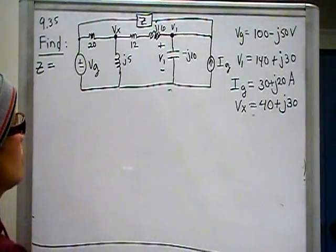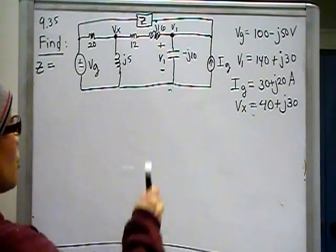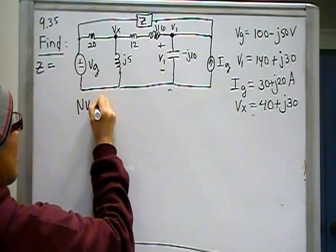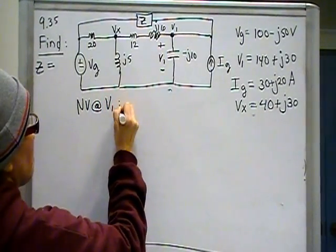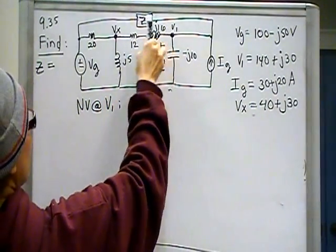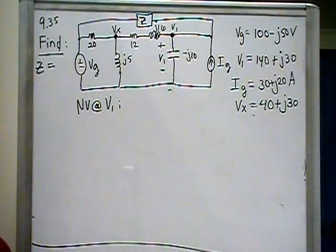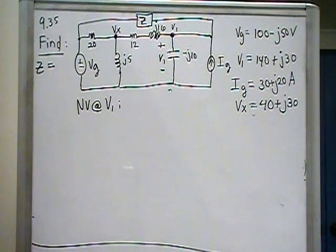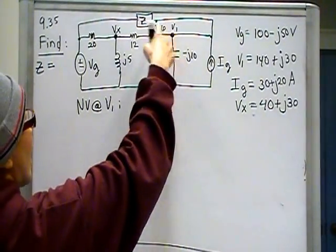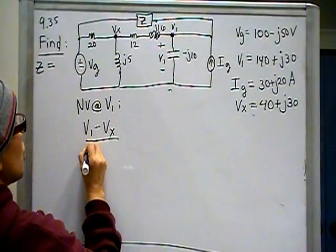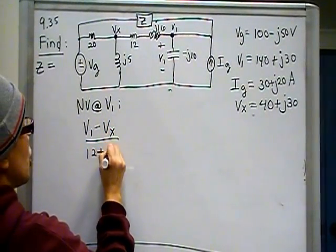Now we have that information. Naturally we want to do a node voltage at v1. So node voltage at v1. Well, from here to here, that current. And don't forget, by the way, that node voltage is an application of Kirchhoff's current law, which means the sum of the currents in and out of the node is equal to 0.